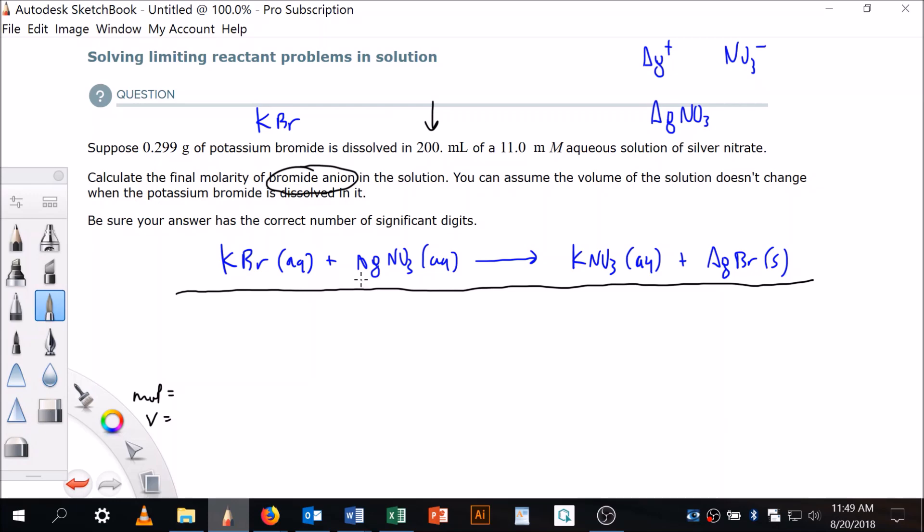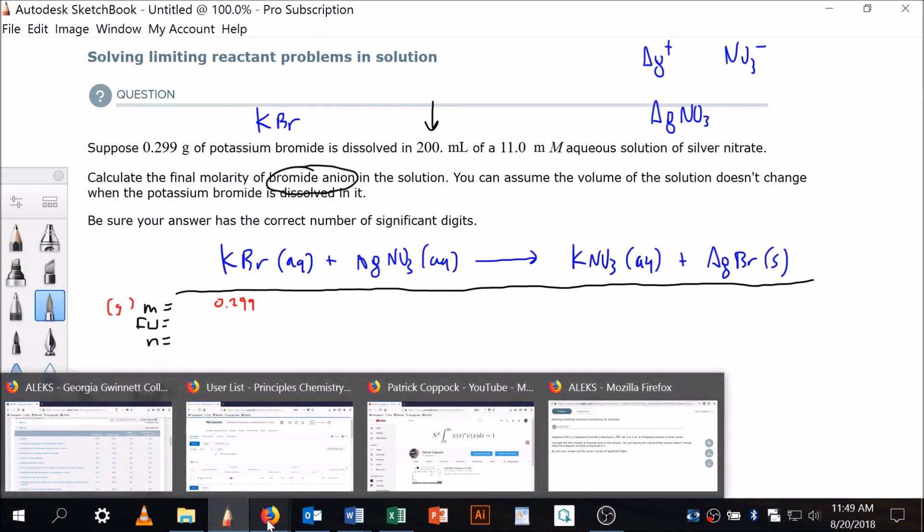All right, so I've got 0.299 grams of this stuff, that's my formula weight, and here's my moles. 0.299 grams of this stuff, so being grams, and the formula weight of potassium bromide is what? I'm gonna look it up.